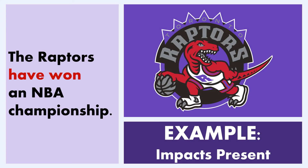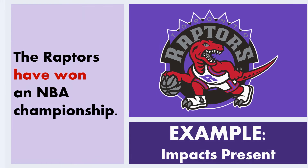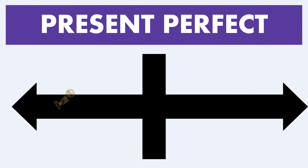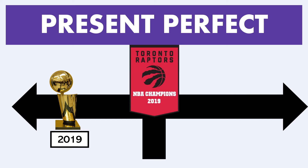Now let's look at an example where a past event impacts the present: 'The Raptors have won an NBA championship.' We have the word 'have' paired with the past tense verb 'won,' and in this context, the past event has an impact on the team's status currently. On our timeline: in the past — 2019 — the Raptors won an NBA championship, which explains why they currently have a championship banner in their stadium.